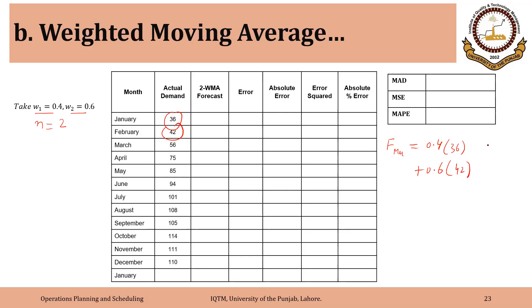So whatever is the answer, that will be the forecast for March. Now for April, forecast for April will be equal to 0.4 into 42 plus 0.6 into 56. That is why it is called moving average. We are dropping one period and adding a new one.